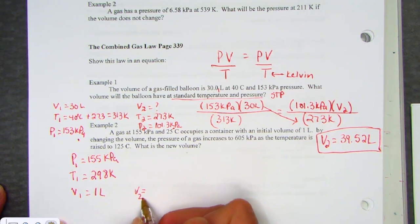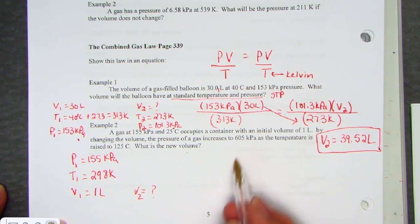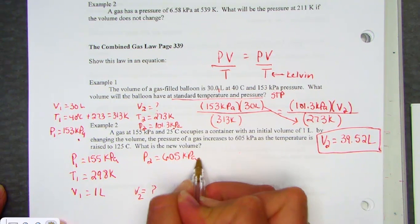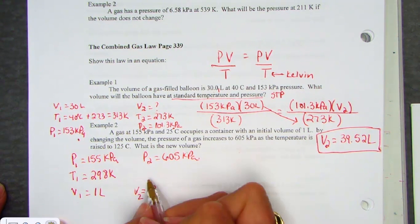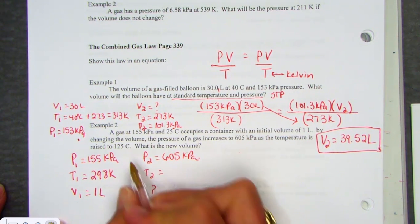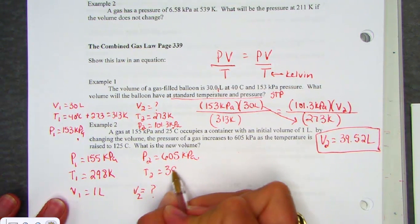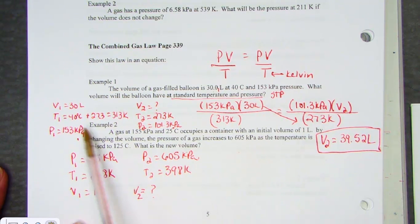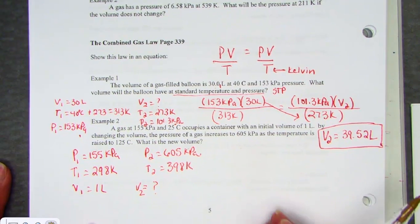We change the volume. The gas pressure has gone up to 605 kPa units. So the pressures are matching. That's a good sign. We don't need to adjust any pressure units. And the temperature has been raised to 125. So 125 and 273, we're going to need to put in the Kelvin unit, 398K. So instead of just writing down Celsius degrees as I did in the previous example, I just converted right away into the Kelvin.